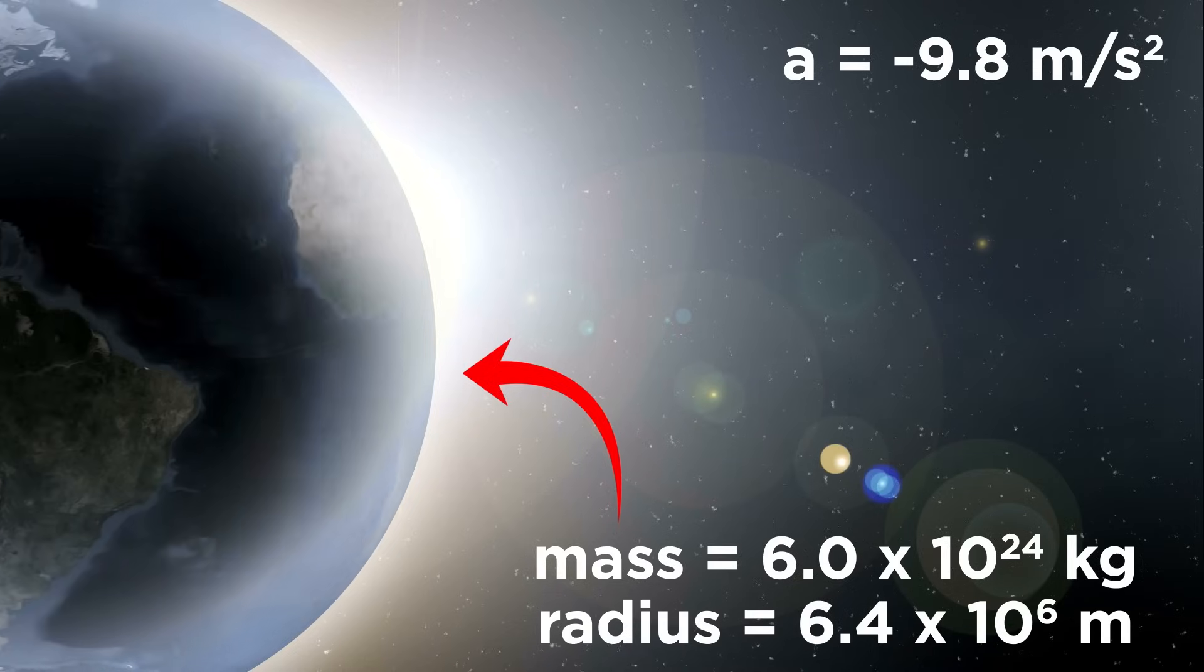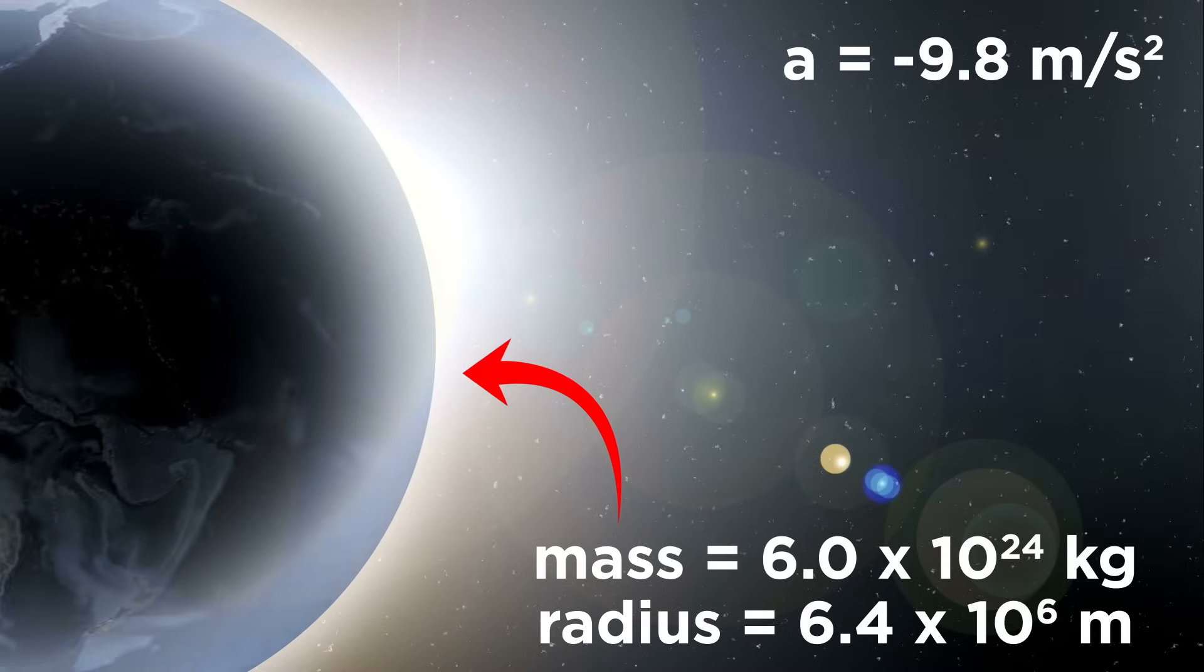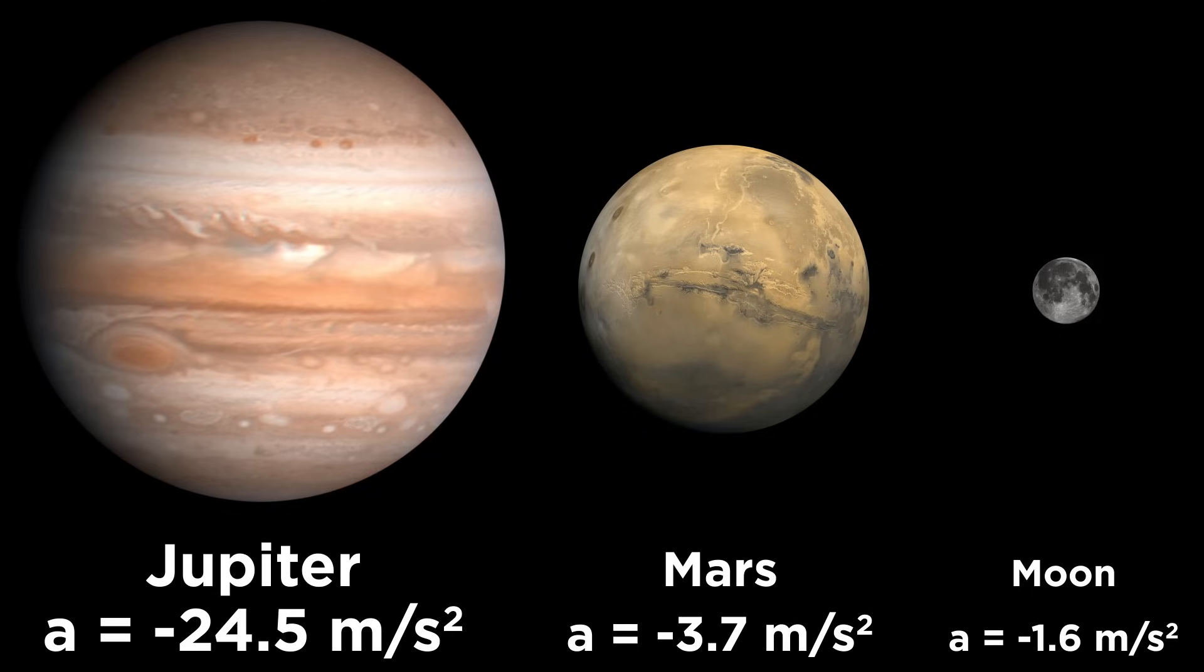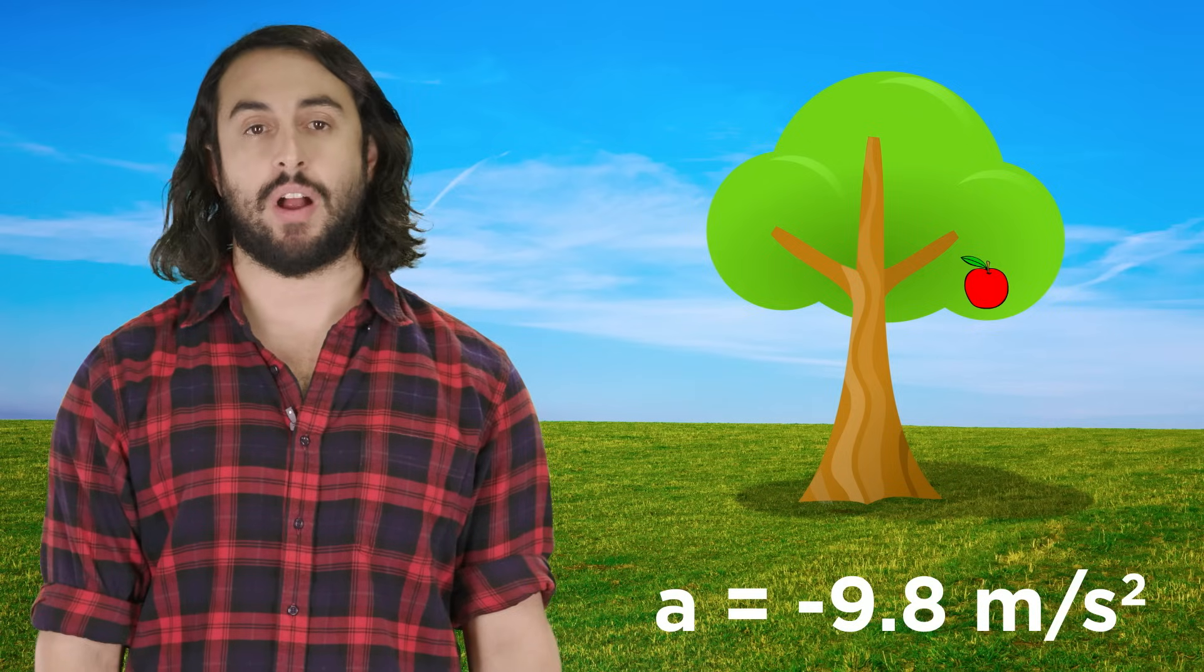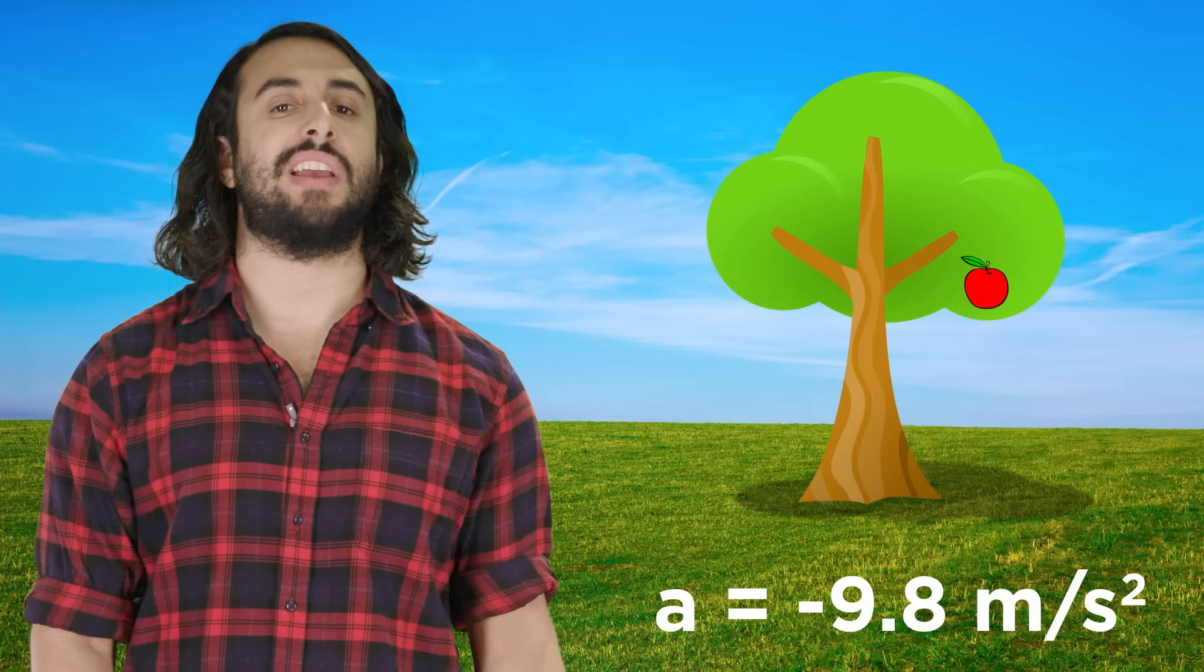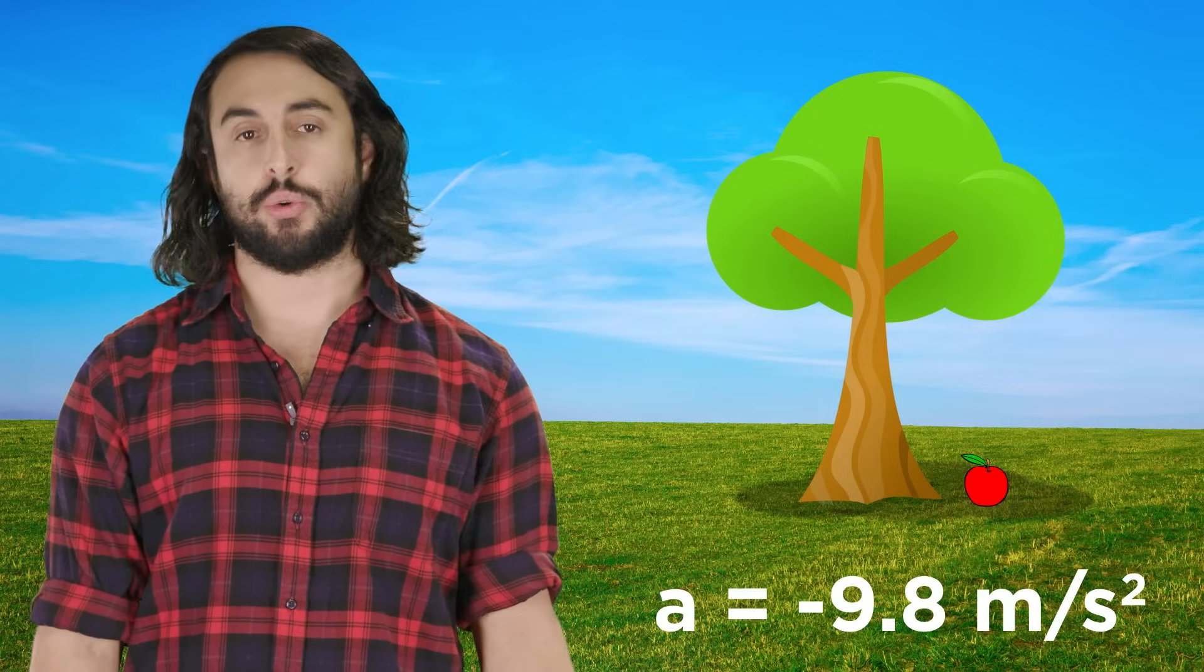This value is unique to the earth since the earth has a particular mass and radius. This value would be different if we were on some other moon or planet, but we humans tend to spend most of our time here on earth, so we can just associate acceleration due to gravity with this value unless otherwise specified.